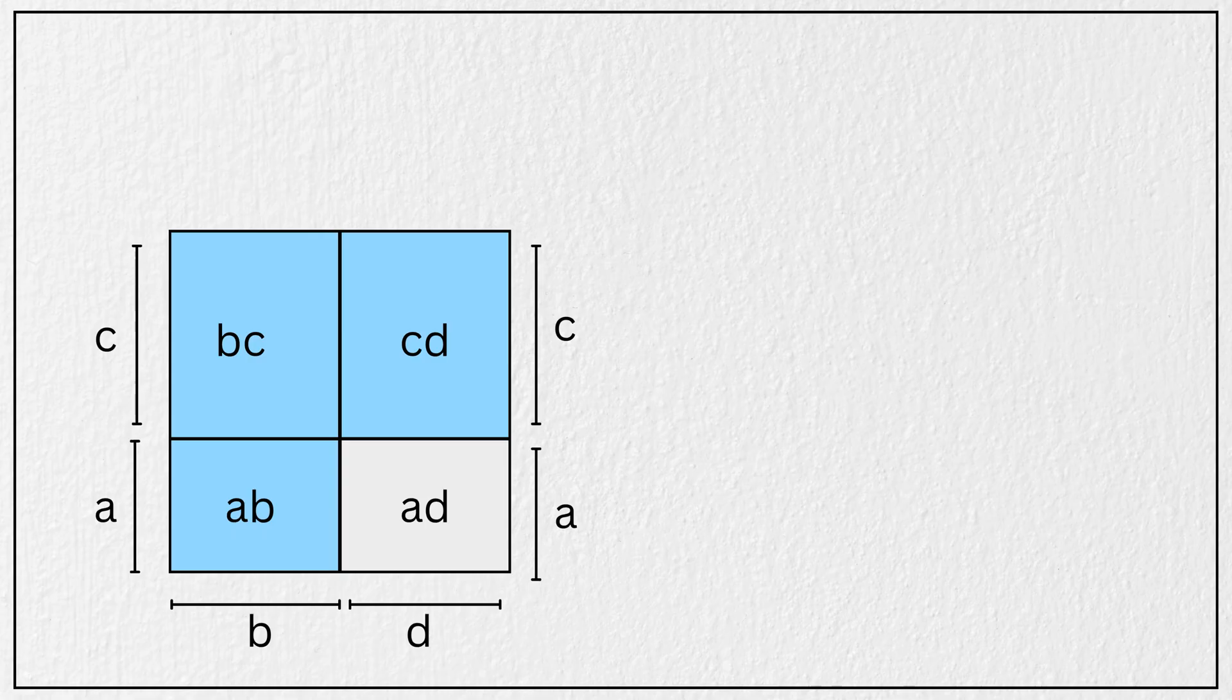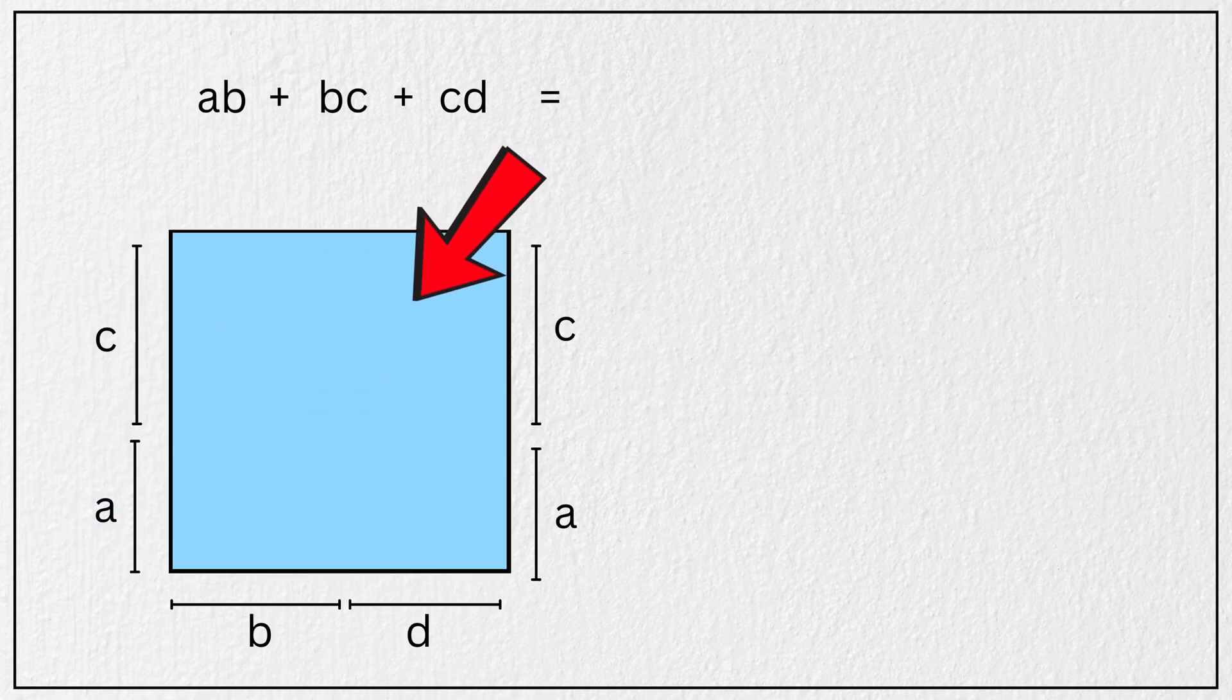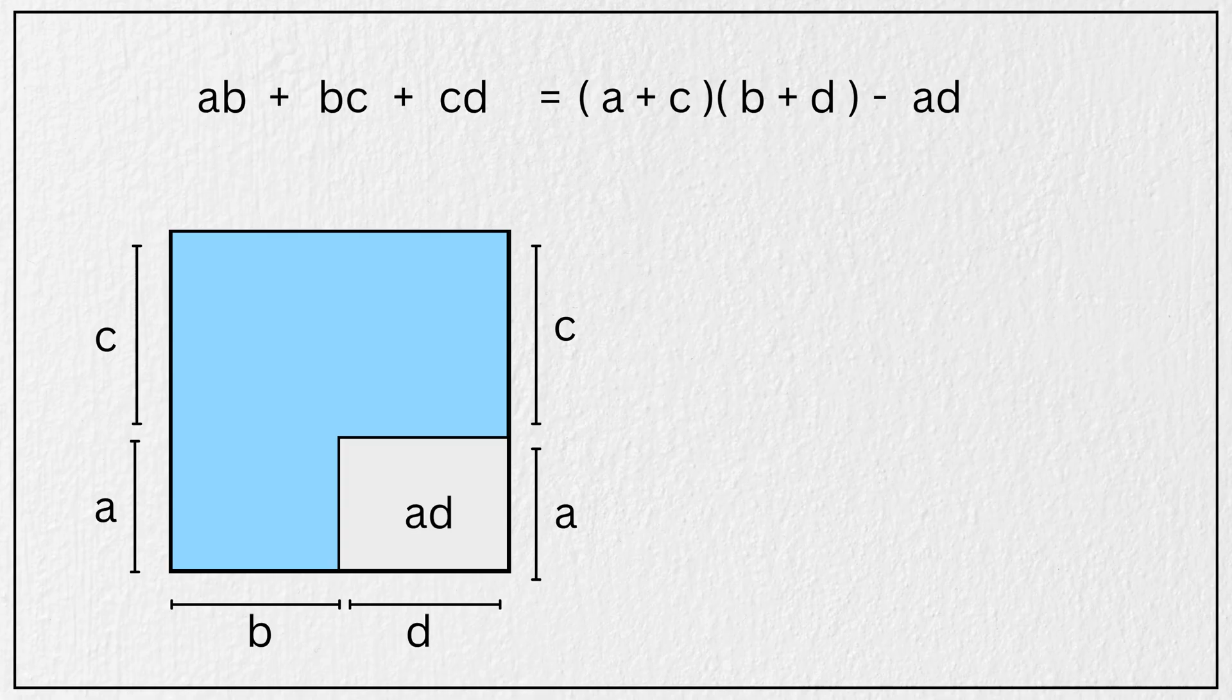So algebraically, we can write this. A times B plus B times C plus C times D equals the total area of this big rectangle, which is A plus C times B plus D minus A times D.